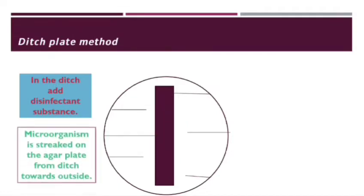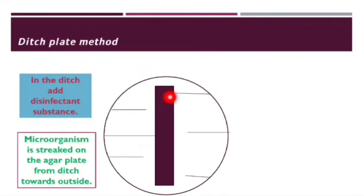Next step is to streak microorganisms. Different types of microorganisms will be streaked in different streaking lines from the ditch towards outside.